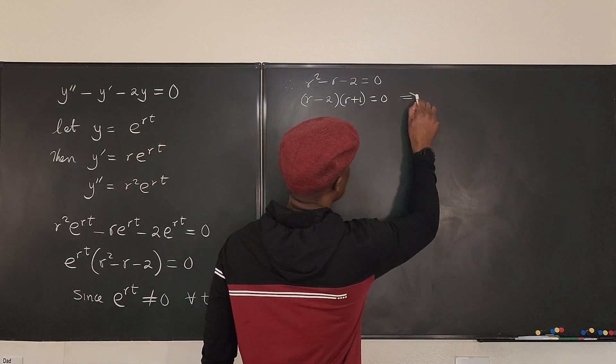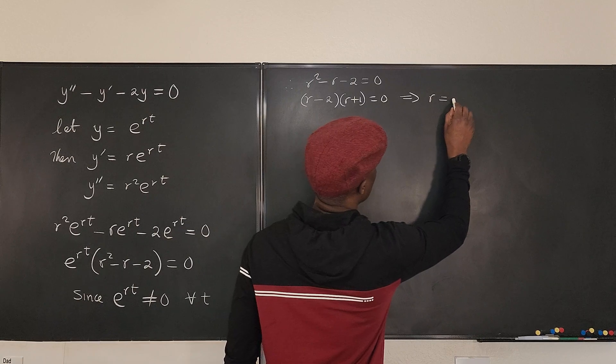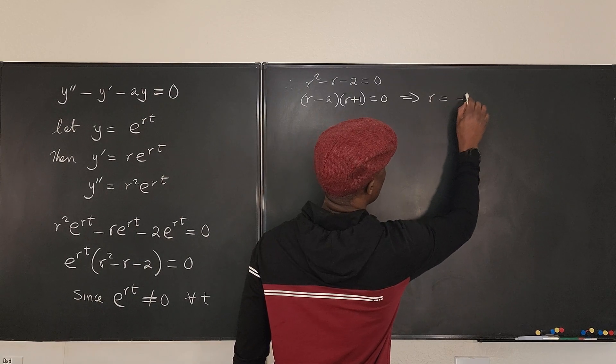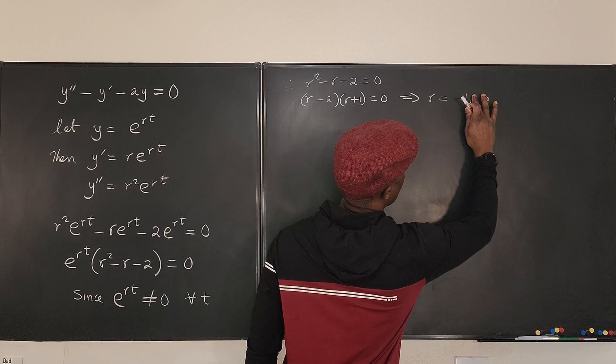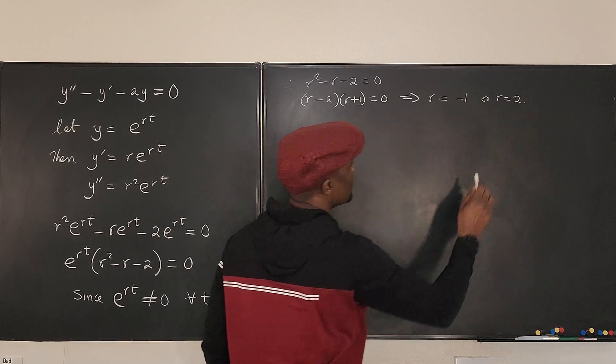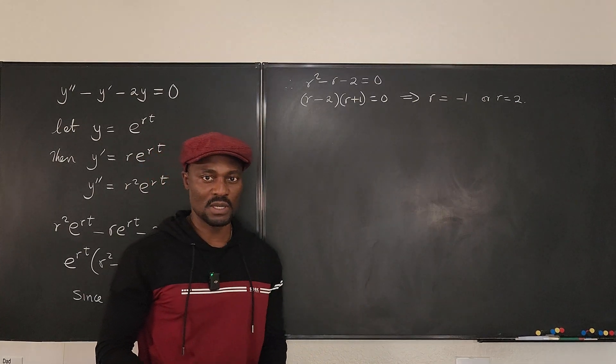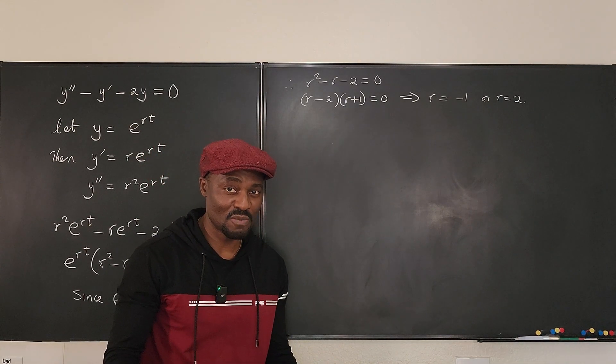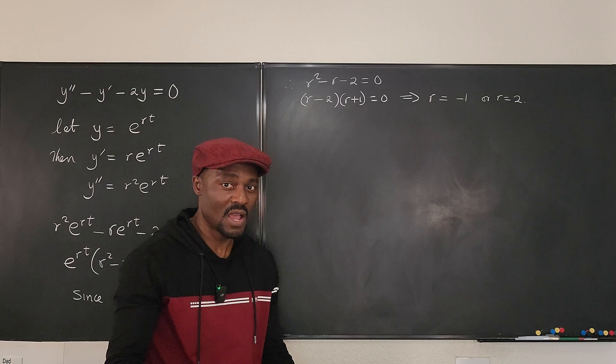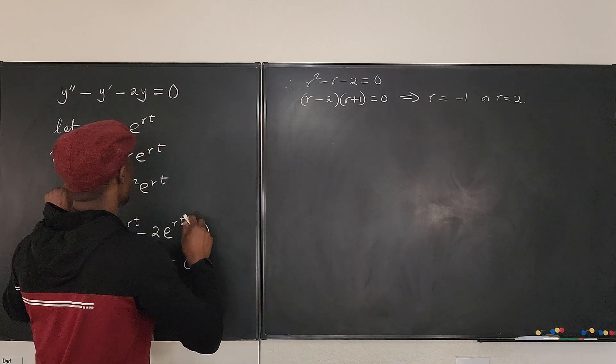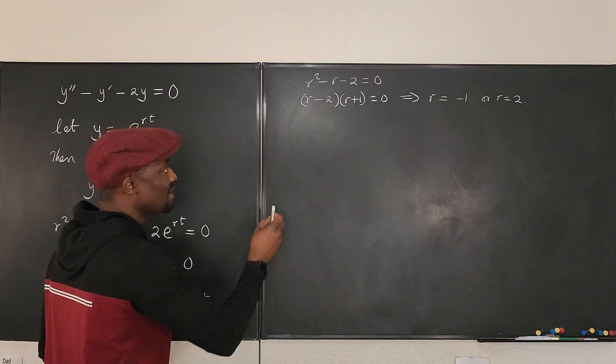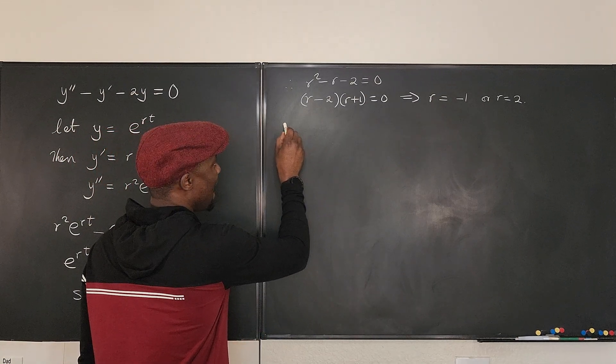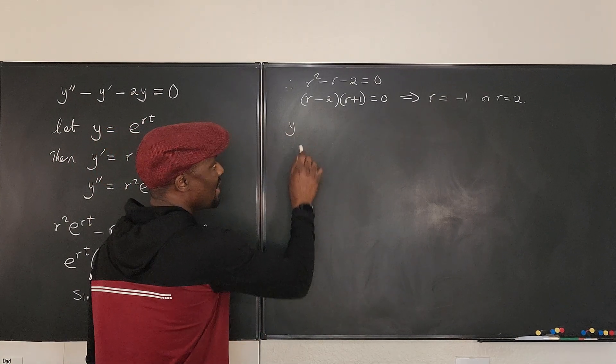...which implies that r equals negative one or r equals two. And do you think we're done? Well, essentially, remember what our assumption was? Our assumption was that y is equal to e^(rt).